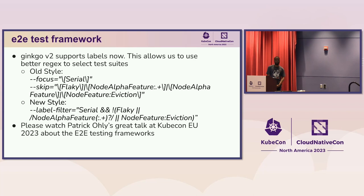Is there a reason you didn't choose to use open source frameworks like Robot Framework or others, rather than rolling your own? Not quite. We do use Ginkgo — that's an open source framework. That drives the E2E test framework. We can't just use Ginkgo directly, so we've written a shim, which is what we call the E2E test framework — a mini program that wraps around Ginkgo to do additional things.